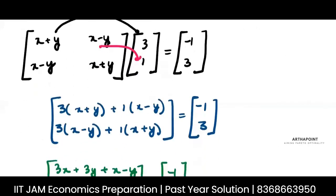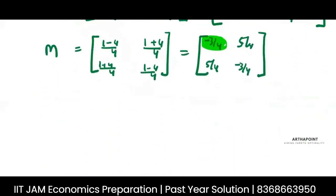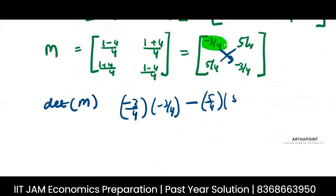Determinant of M is minus 1. Find out the determinant: minus 3 by 4 into minus 3 by 4 minus this into this, 5 by 4 into 5 by 4.